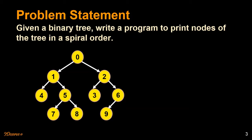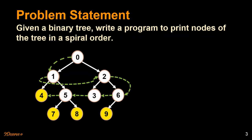I'll show you the traversal visually so you can understand what we are trying to do here. If we start from zero, we go to one, traversing at this level from left to right. We print out one, then two, then trickle down to six. We go from right to left here — we go to three, five, four, then come down to seven, eight, nine. I hope the traversal is clear, and this is what we want to do in this problem.